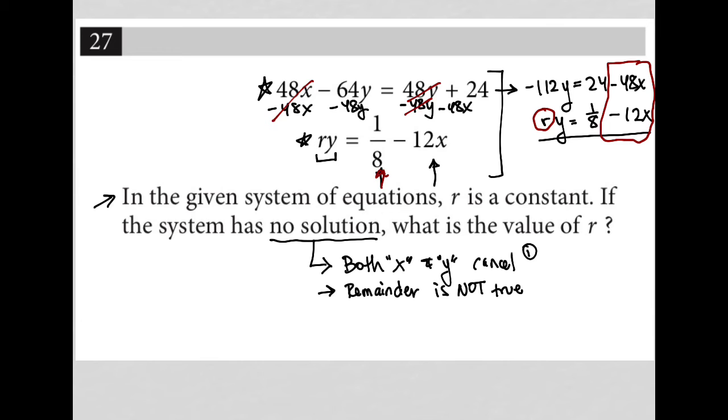The way I'd get those to cancel out by adding these two equations together would be to multiply the bottom equation by negative 4. I'd have negative 112y equals 24 minus 48x as my first equation. My second equation would then become negative 4ry equals negative 1/2, because negative 4 times 1/8 equals negative 1/2, and then plus 48x.